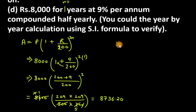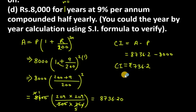Now we need to find the compound interest. Compound interest is amount minus principal. Amount is 8,736.2, principal is 8,000. So the final answer is 736.2 rupees. The compound interest is 736.20. This is the answer for part d.